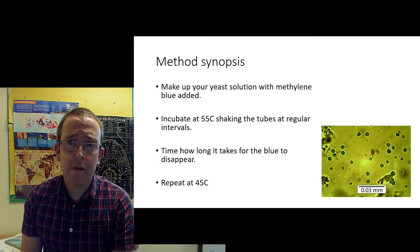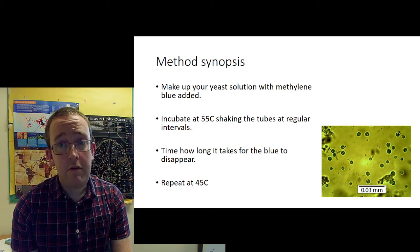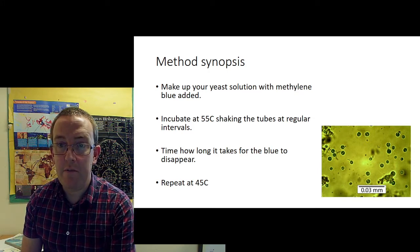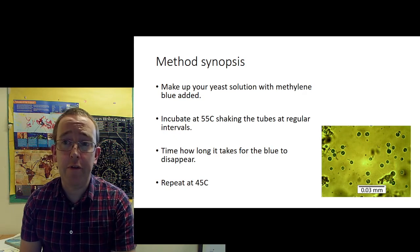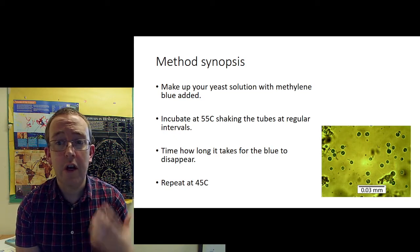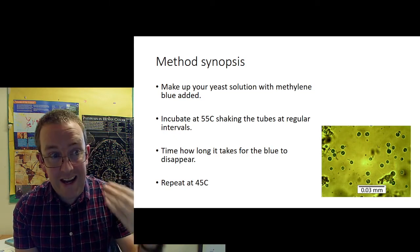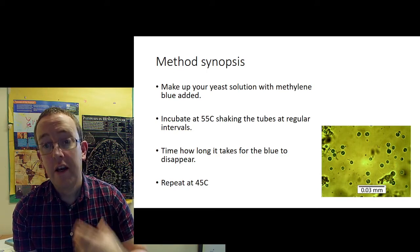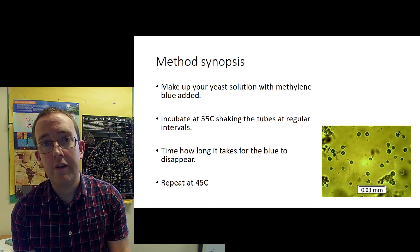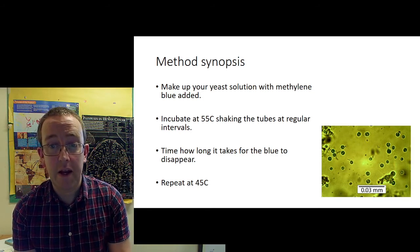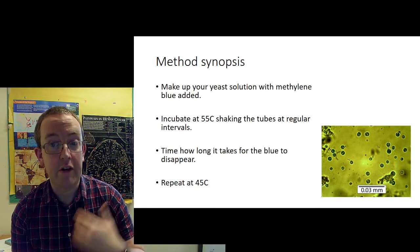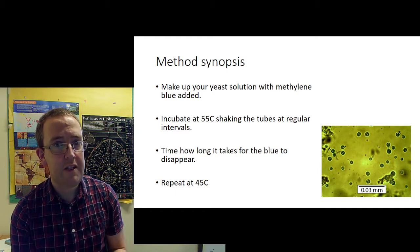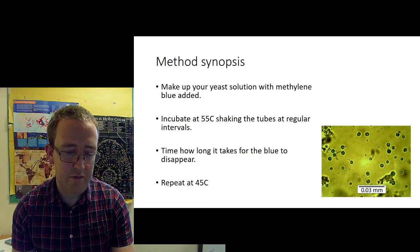Now, in terms of a synopsis method, I'm assuming you've all read this and you know what's going on. You're going to make up your yeast solution with methylene blue added. You're going to incubate it at 55 degrees C. You're going to shake the tubes, not at regular intervals, but at the beginning of the experiment. You're going to shake that through for reasons I've previously described. And then, obviously, the time that the blue colour takes to disappear is what you're measuring. I'm going to repeat at 45 degrees C and see if that makes any sort of difference.